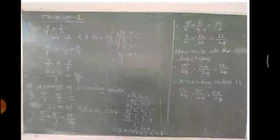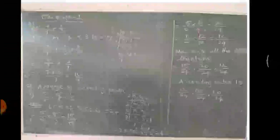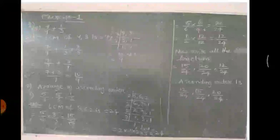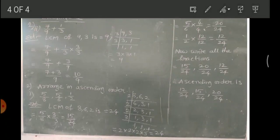After converting to like fractions, we can write the ascending order easily based on numerator values. The numerators are 15, 20, and 12. Ascending order means smallest to biggest, so the answer is: 12/24, 15/24, 20/24. This is how we convert unlike fractions into like fractions and then arrange them in ascending order. Thank you children.